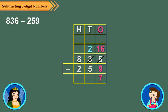16 ones minus 9 ones is equal to 7 ones. Next, subtract the tens. Again, 2 is less than 5. So we regroup 8 hundreds, 2 tens as 7 hundreds and 12 tens. 12 tens minus 5 tens is equal to 7 tens. Finally, subtract the hundreds. 7 hundreds minus 2 hundreds is equal to 5 hundreds.